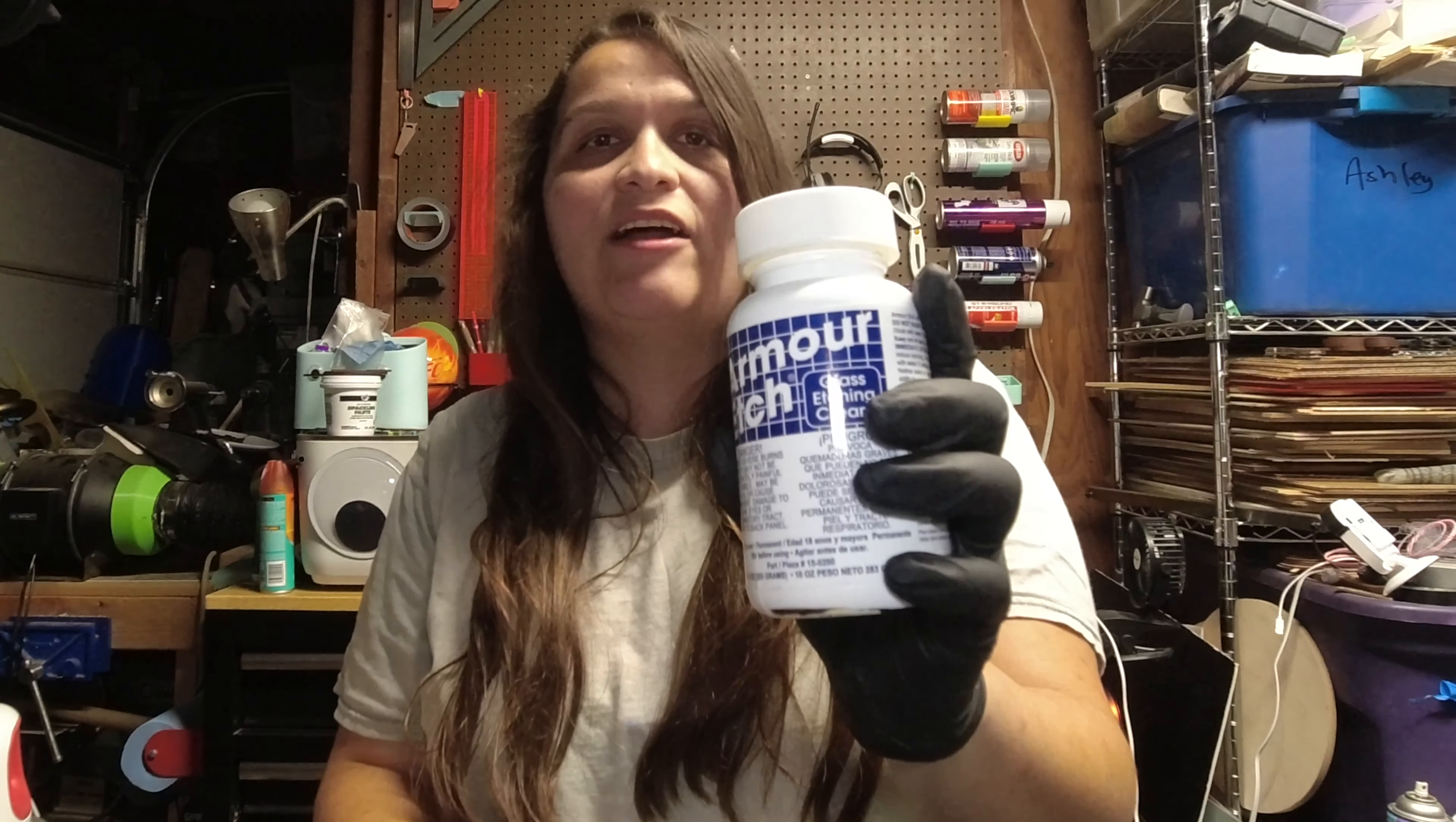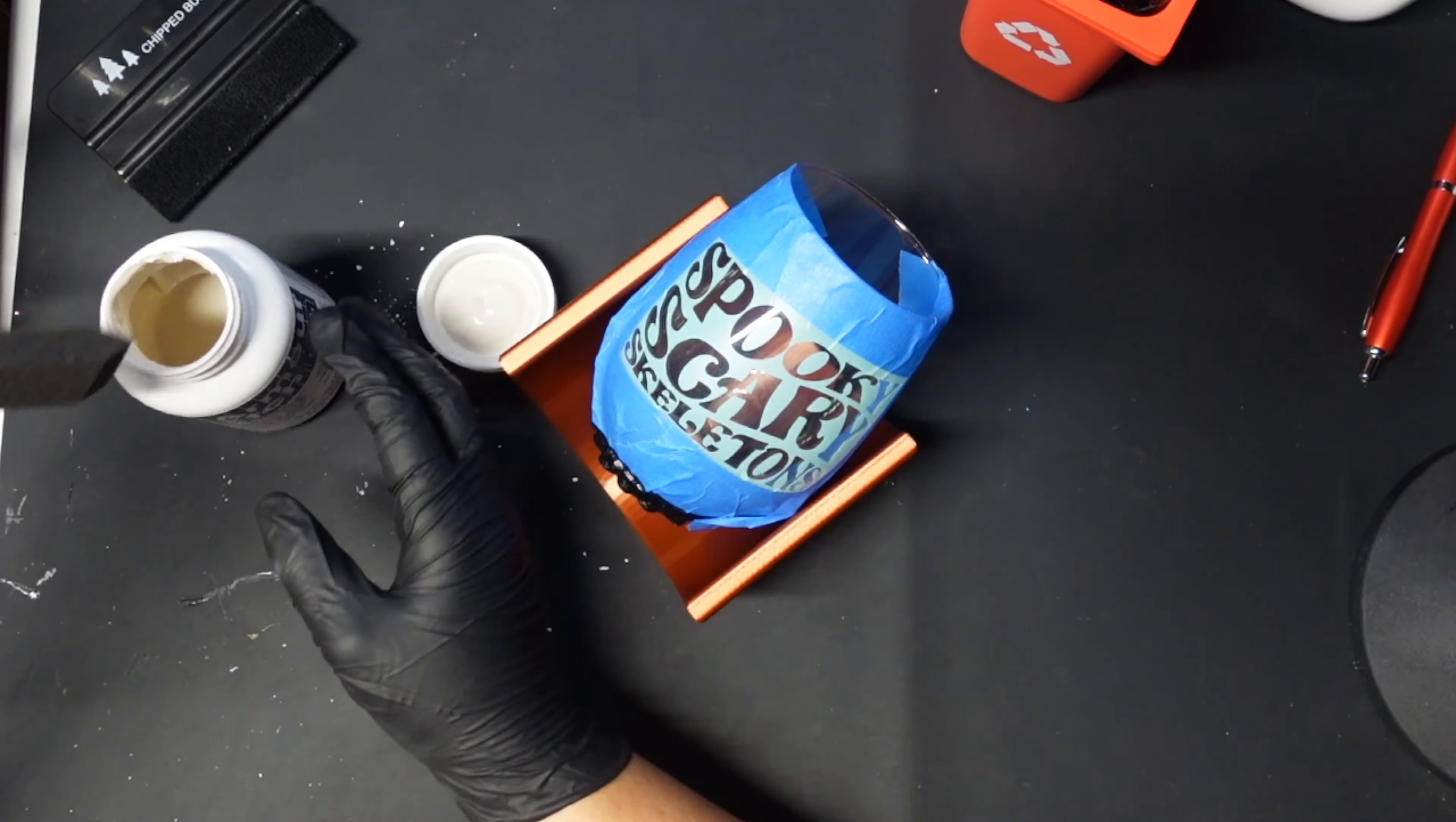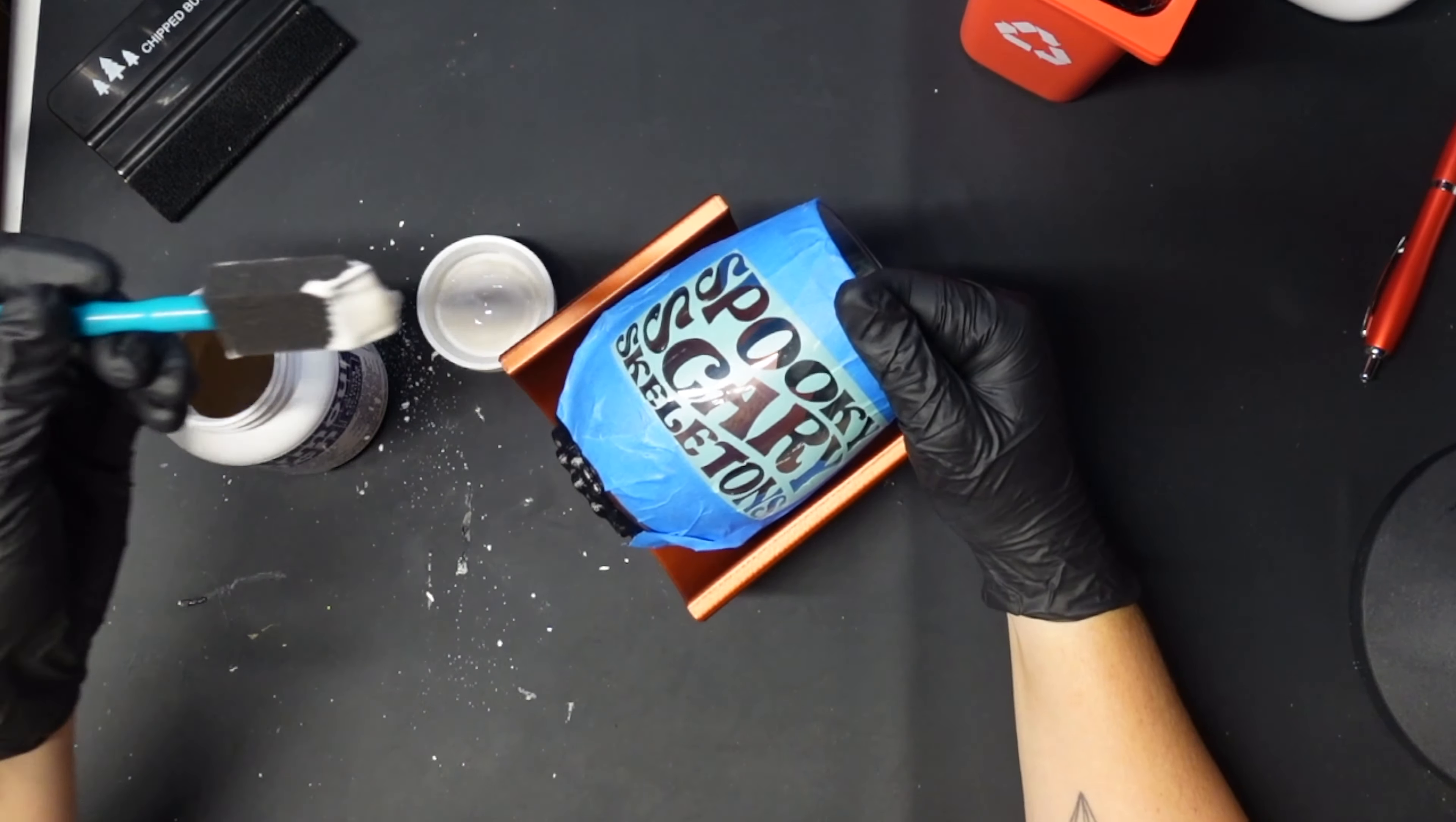So now what we're gonna do is we're gonna take our armor etch and apply it to the glass. Now I don't think this is gonna come out perfect. Ooh this has seen some better days. So what I like to do is I like to just get a nice big glob on here and you definitely don't want to brush back and forth.